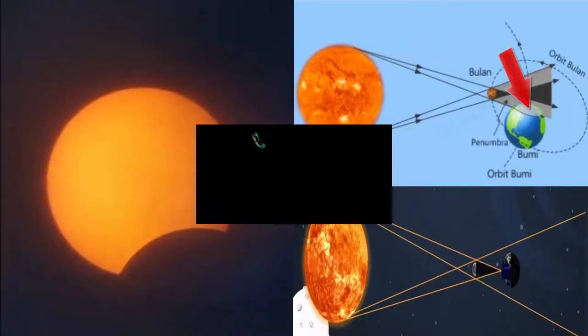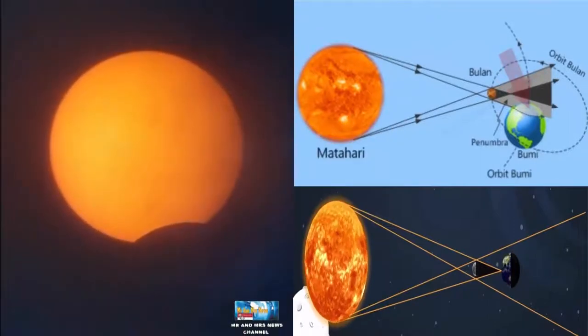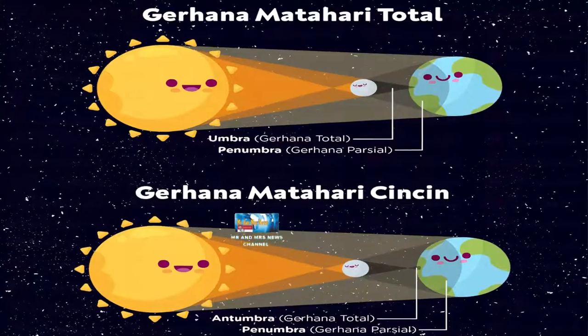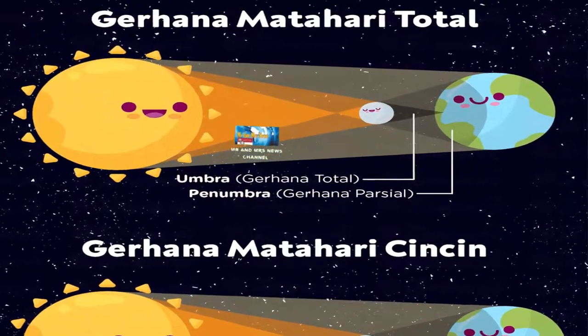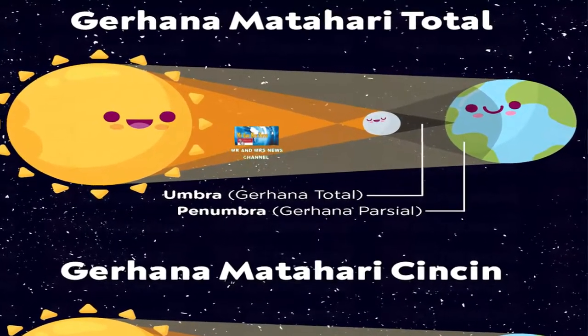Berdasarkan cara tutupannya matahari, terdapat 4 jenis gerhana matahari: gerhana matahari total, gerhana matahari cincin, gerhana matahari sebagian, dan gerhana matahari hibrida atau campuran.